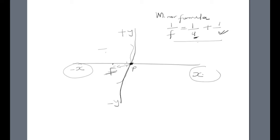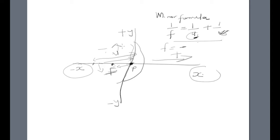Using the new Cartesian sign convention: anything in front of the mirror corresponds to the negative x-axis, and anything behind corresponds to the positive x-axis. If the height is upright it is positive; if the image is inverted it is negative. So the focus of a concave mirror is in front and therefore negative, while for a convex mirror the focus is behind and therefore positive.